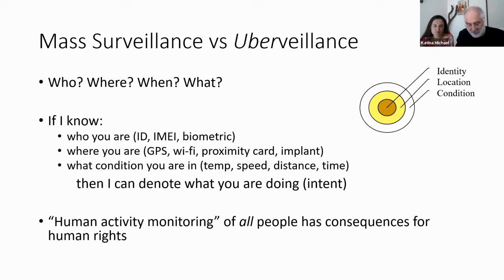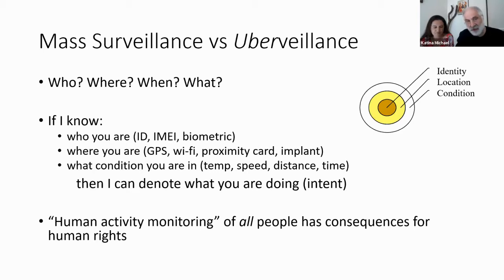Uberveillance can be a predictive mechanism for a person's expected behaviour, traits, likes or dislikes, based on historical fact, or it can be about real-time measurement and observation, or it can be something in between.